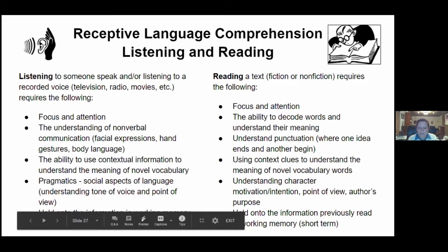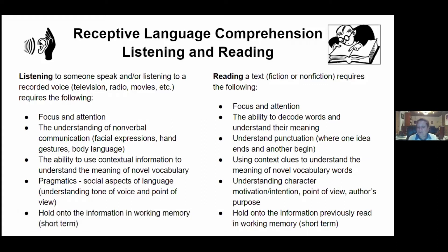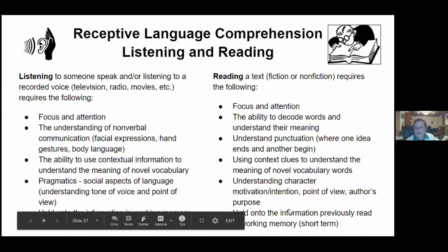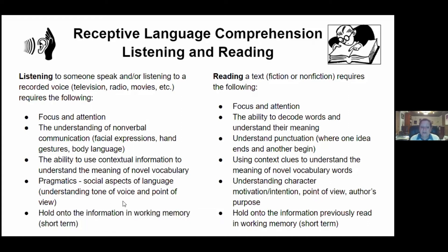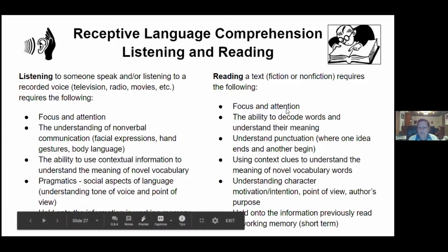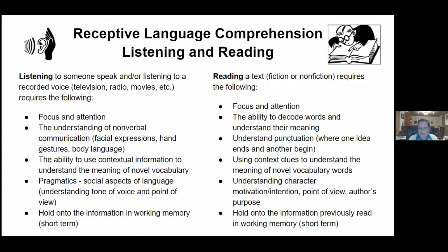For reading, under pragmatics and the social piece, you need to understand a character's motivation, intention, point of view, and the author's purpose. With vocabulary in reading, we teach students to use context clues — just as in a conversation, if you don't understand a word, look around and see if there's a clue nearby. There are a lot of overlaps, but two distinct areas within receptive language and comprehension.